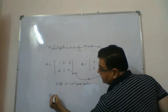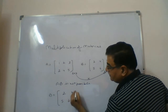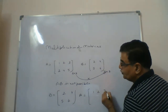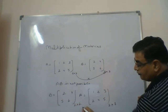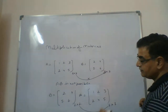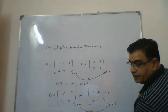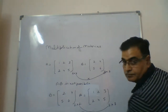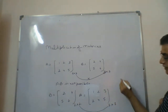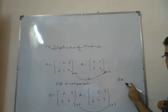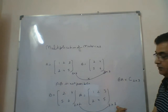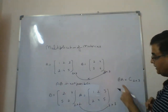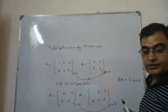Now if I say find BA: B is [2, 4; 5, 6] with order 2×2, and A is [1, 2, 3; 2, 4, 5] with order 2×3. The columns of B equal the rows of A — both are 2 — so yes, BA is possible. BA will give a new matrix C with order 2×3, taking rows from B and columns from A. So AB is not possible but BA is possible and gives a 2×3 matrix.